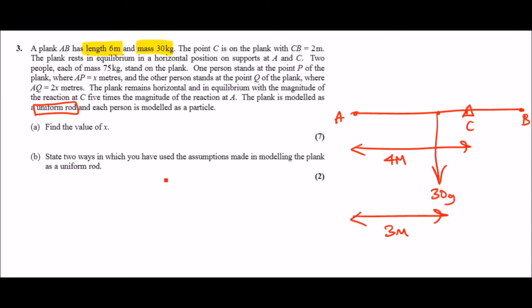The idea is that I'm always going to take moments around A because it's easier. Now the plank rests in equilibrium in a horizontal position on the supports A and C. So we've got supports there, meaning there's some sort of reaction going on. Now before I carry this on, I want to see if the reactions have any values. And yes, if you look at this line here, the plank remains horizontal and in equilibrium with the magnitude of the reaction C five times the magnitude of A. So if the magnitude of A is R, then C would be 5R.